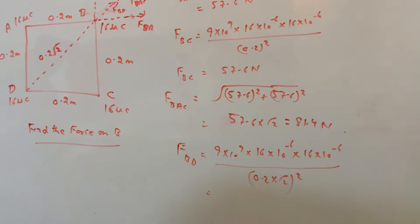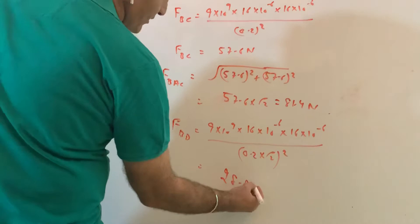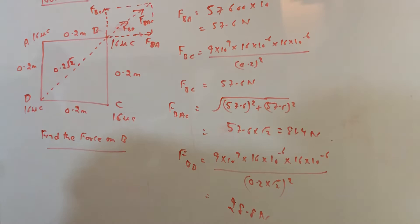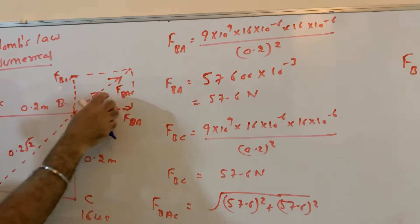So now if you simplify this, this will come out to be equal to 28.8. Now this force is acting in the same line as F_BAC. So now be careful. So total force on B will be F_BD plus F_BAC. Why? Because F_BD and F_BAC are acting along the same line. Is it clear?